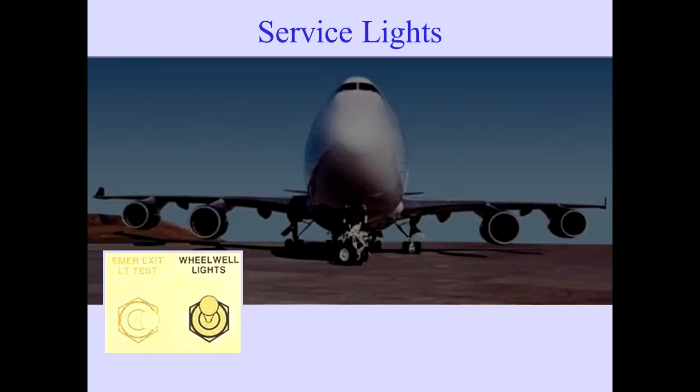Service lights are located at various work areas such as the wheel well and cargo compartments. Controls for these lights are located at the individual service areas. This example shows the nose wheel well lights.